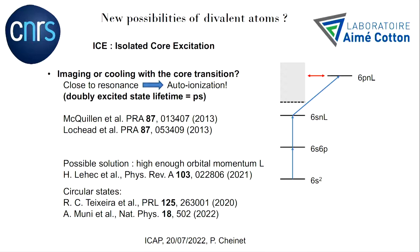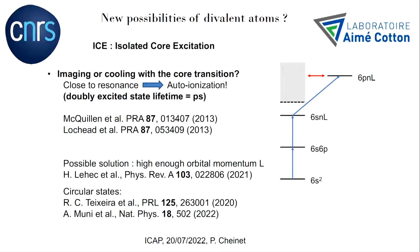That has been done in two papers already. What we wanted to do is study going to large orbital momenta, because the centrifugal barrier should prevent the Rydberg electron from getting close to the core, so auto-ionization should slow down significantly. We performed this study and found, sadly, that ytterbium is the worst species to do that. If you go all the way to circular states it is going to work whatever the species, and this has been beautifully demonstrated at LKB.